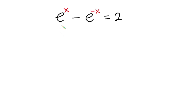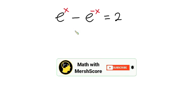Hello everyone! In this video we have this interesting problem: e to the power x minus e to the power negative x is equal to 2, and we have to find the value of x. Before we begin, as always pause the video and try first, and if you are new here consider subscribing.